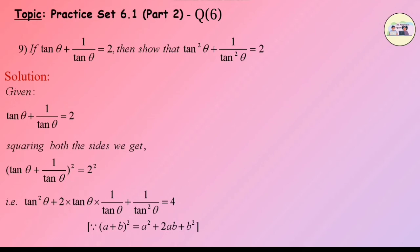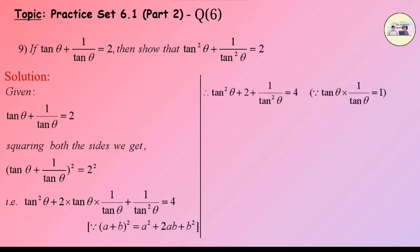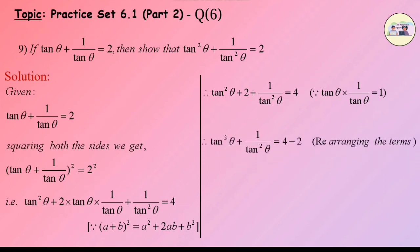Since (a + b)² = a² + 2ab + b², therefore tan²θ + 2 + 1/tan²θ = 4, since tanθ × 1/tanθ = 1. Rearranging the terms, tan²θ + 1/tan²θ = 4 - 2 = 2. Therefore tan²θ + 1/tan²θ = 2.